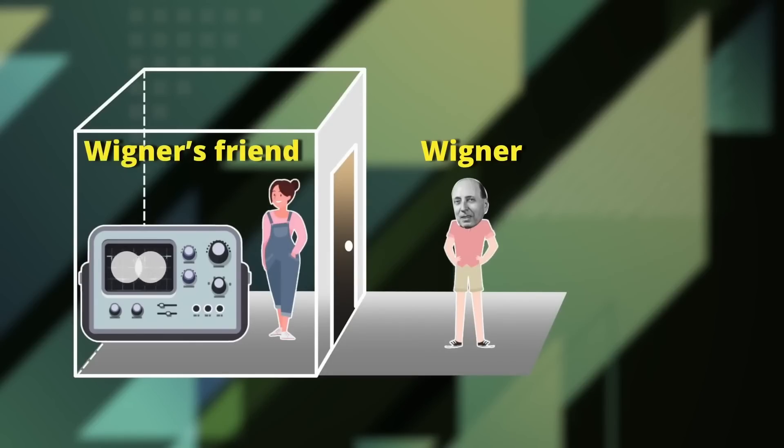Your friend is in a lab working with a quantum particle that could appear either left or right on the screen. Before you measure the particle, it is, as we say, in a superposition of left and right. But once your friend measures the particle, she'll find it either left or right, not both. It's like Schrodinger's cat, but with less fur and more lab coats.